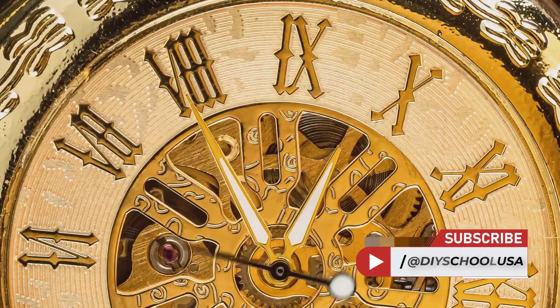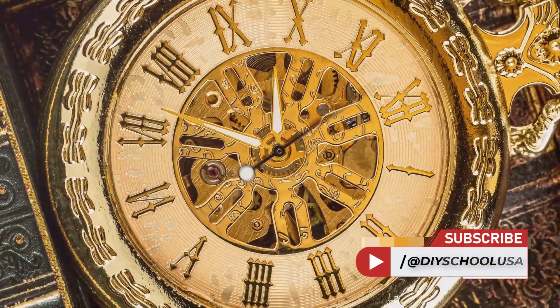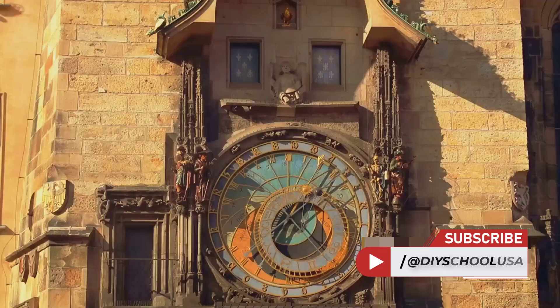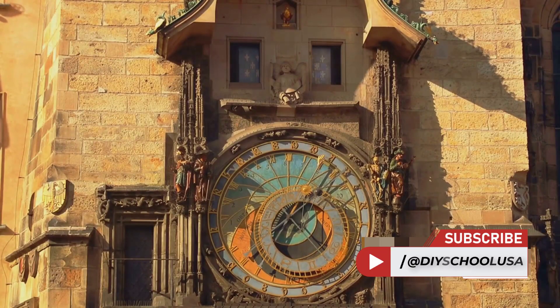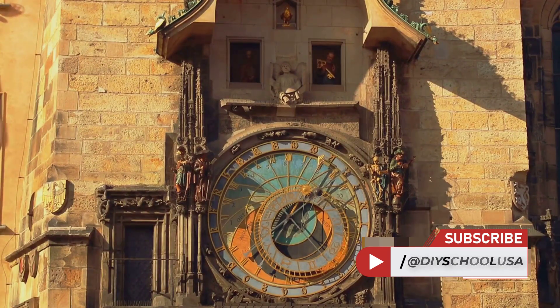And the influence of this base 60 system, it's all around us even today. Every time you check your watch or glance at a clock, you're seeing the remnants of the Babylonian number system. 60 seconds in a minute, 60 minutes in an hour, that's Babylonian mathematics at work.